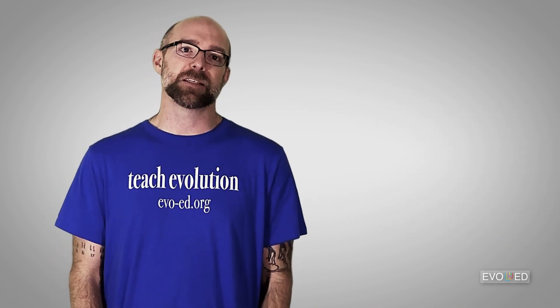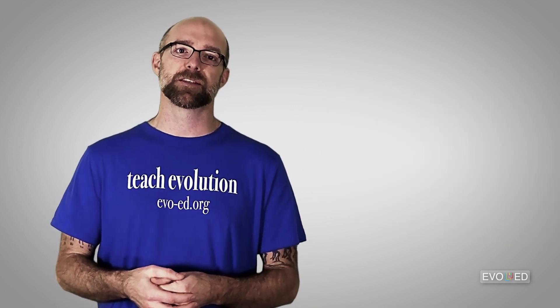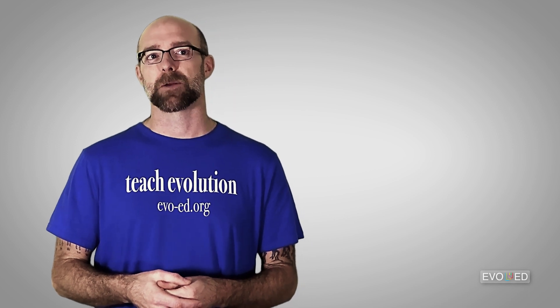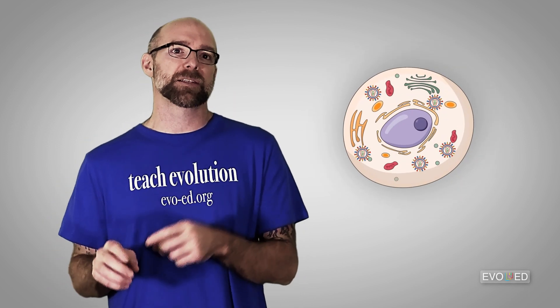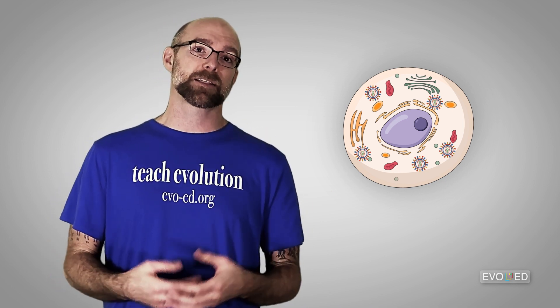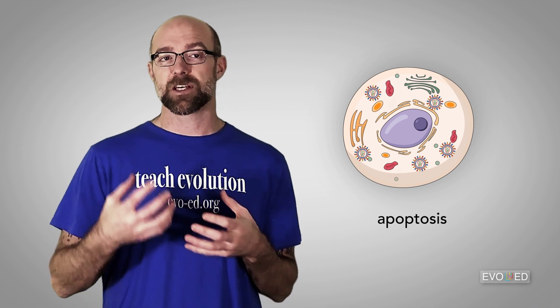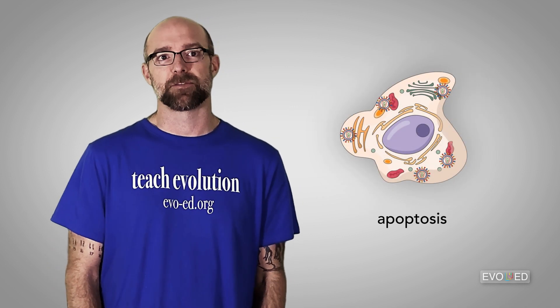The final way that viruses can escape from host cells is through cell destruction. In animal cells, sometimes there's a defense response where the cell recognizes that it's infected and undergoes a process called apoptosis, which is a way that the cell can destroy itself.